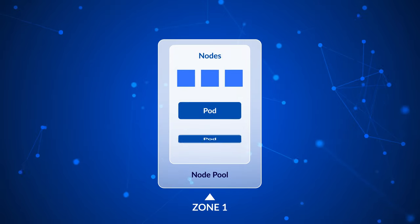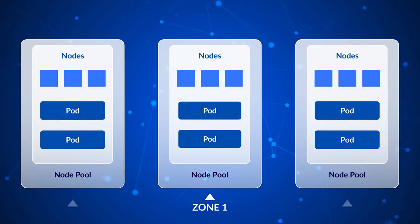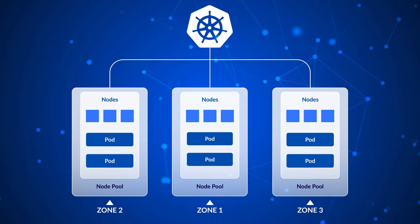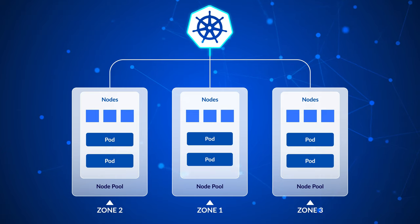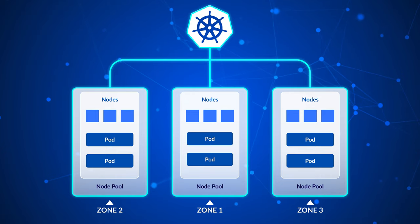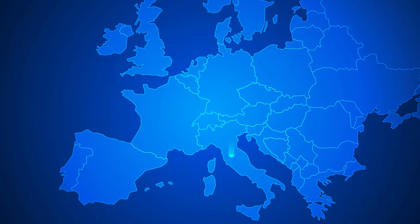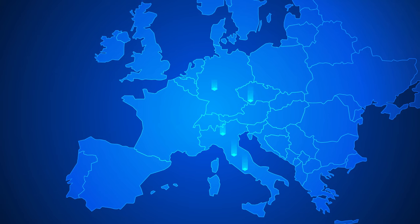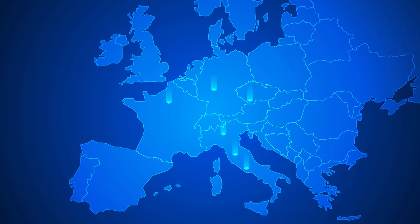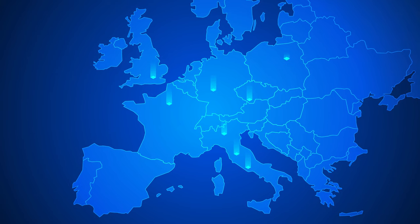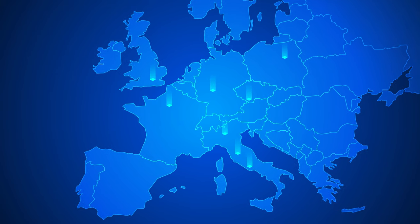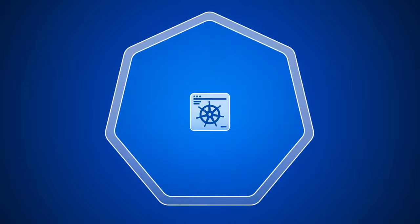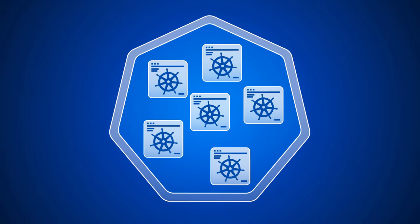Aruba Managed Kubernetes lets you run your clusters in three different availability zones to ensure maximum redundancy. What's more, you have the assurance that your data is housed in Aruba's network of data centers in Italy and Europe, all built to the highest physical and logical security standards.